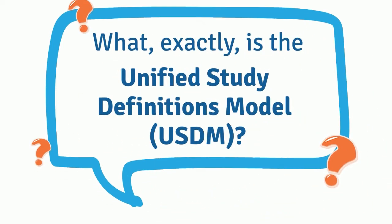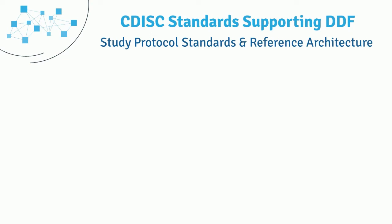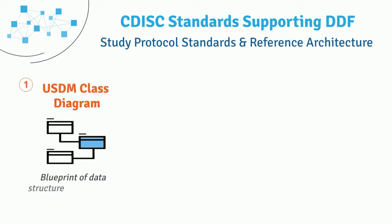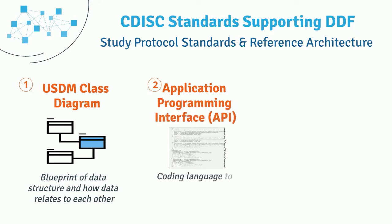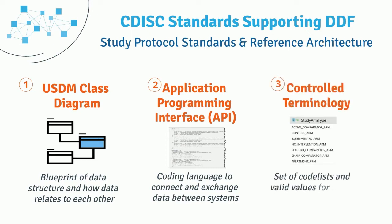What exactly is the Unified Study Definitions Model? The CDISC standard supporting DDF includes study protocol standards and reference architecture. Three main components are: the USDM class diagram, which is the blueprint of the data structure and how the data relates to each other; the Application Programming Interface, or API, which is the coding language used to connect between different systems; and controlled terminology, which are a set of code lists and valid values.